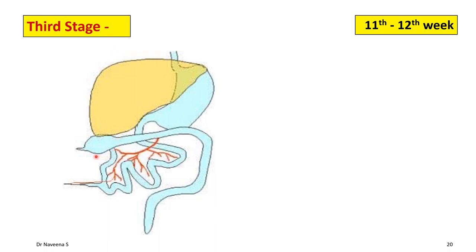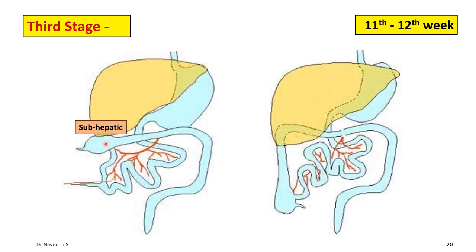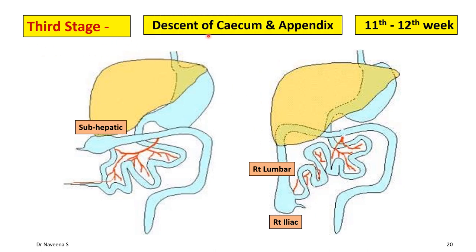Now let's move on to the third stage. By the end of the second stage, the cecal bud lies in the sub-hepatic region, from where it starts descending towards the right iliac region, passing through the right lumbar region. By the end of the 12th week, the cecum and appendix reach their definitive position in the right iliac region. The third stage is all about the descent of the cecum and appendix from the sub-hepatic position through the right lumbar region to their definitive position in the right iliac region.